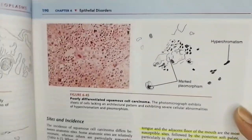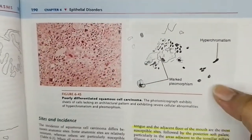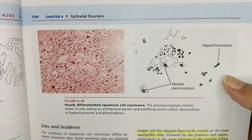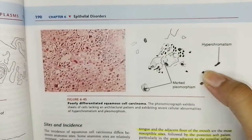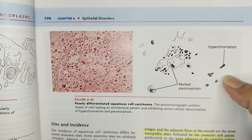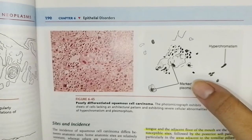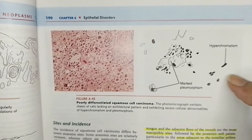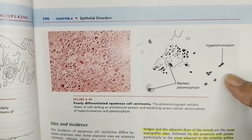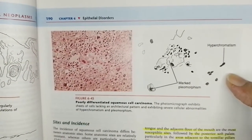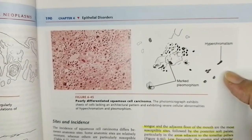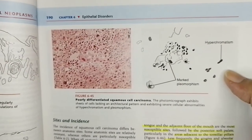In poorly differentiated squamous cell carcinoma, histopathology shows hyperchromatism and pleomorphism of the cells, with a distinct lack of cellular architecture.